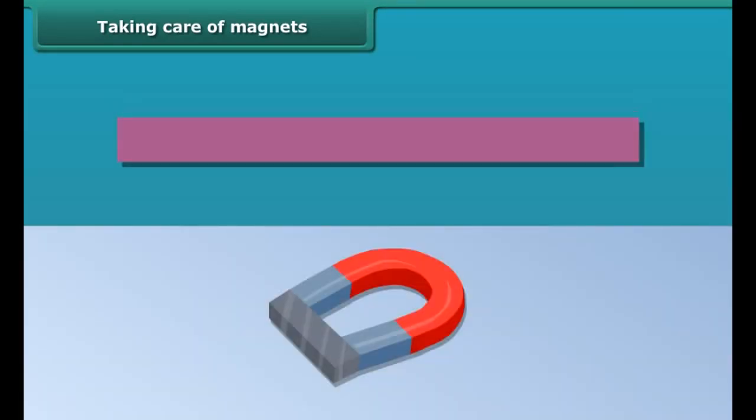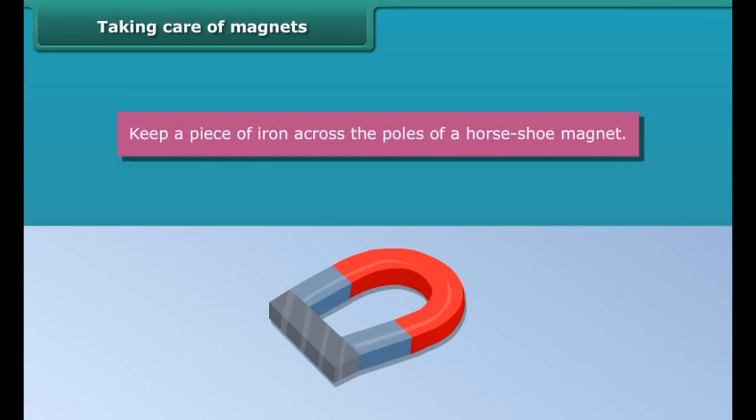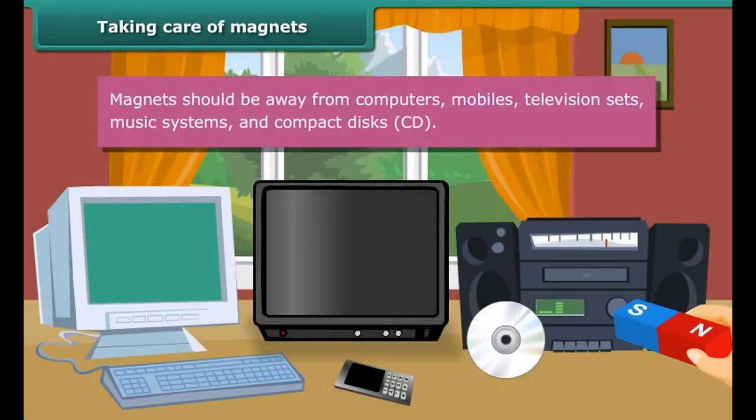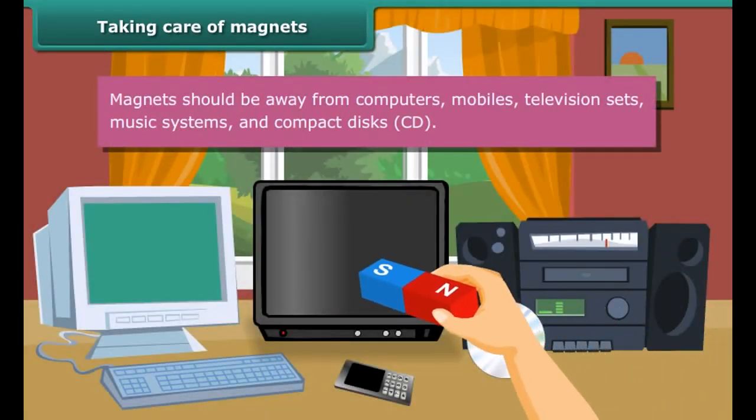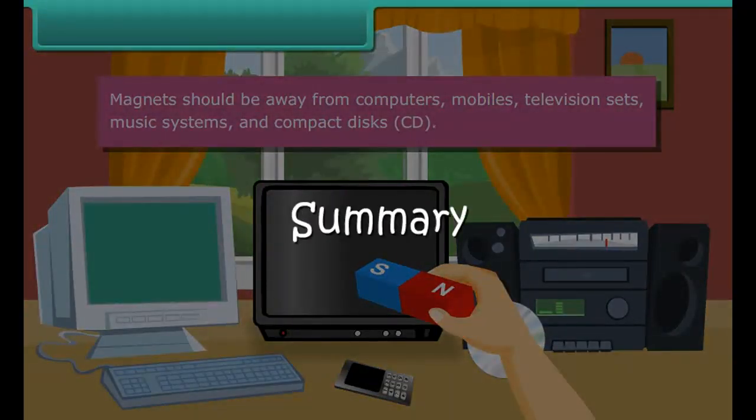Similarly, when the south pole comes in contact with another south pole of a magnet, they do not attract each other. In fact, they repel each other. This is better known as similar poles repelling each other.